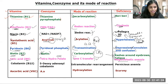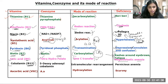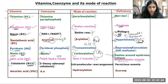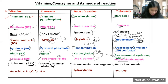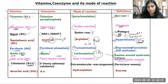Next is vitamin B12, that is cobalamin — sometimes asked by name in matching questions. The coenzyme of vitamin B12 is 5-deoxyadenosylcobalamin. The mode of reaction is intramolecular rearrangement. When there is a deficiency of vitamin B12, it leads to pernicious anemia — a decrease in the count of red blood cells.